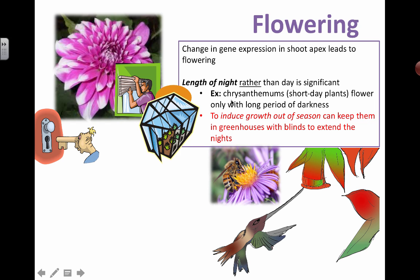For example, chrysanthemums, which are beautiful little flowers, are actually short day plants, which means they're actually long night plants. They need long nights or long periods of darkness in order to actually flower, and the mechanism is explained in the previous video.